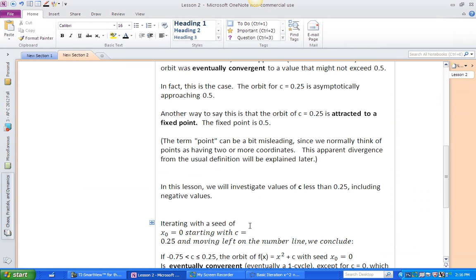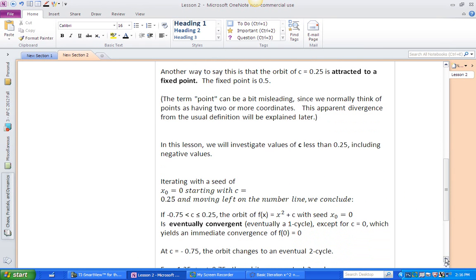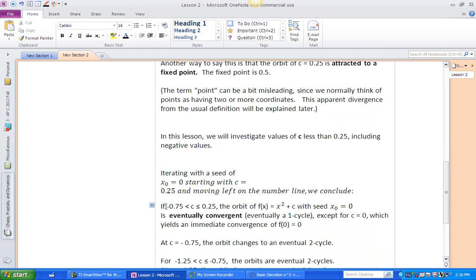We iterated with a seed of x0 equals 0, always doing that. Starting with C is 0.25. And we found that if you go from negative 0.75 to 0.25, the orbit is eventually convergent. It comes down to one number. It's eventually a one cycle. Except, of course, C equals 0, which is an immediate one cycle.